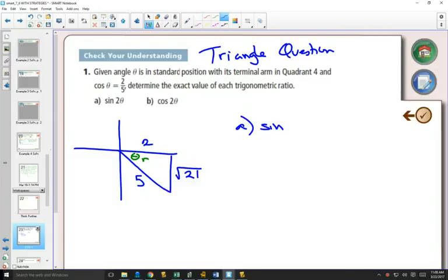Now, sine 2 theta. We don't know what theta is. We know it's in quadrant 4. We don't know the reference angle. This question says determine the exact value, which means it's going to be a non-calculator question. We could figure out what the angle theta is if we had our calculator. Because you could do cos inverse of 2 fifths to find your reference angle, and then figure out what that angle is in quadrant 4. But this question is a non-calculator question. So how do we go about this? We just learned the formula for sine 2 theta is 2 sine theta cos theta.